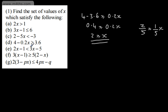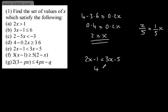For the next one we have x's on both sides, so we treat it like an equation. We have 2x minus 1 strictly less than 3x minus 5. Taking 2x from both sides and adding 5 to both sides gives x is strictly greater than 4. So the set of values that satisfy this is x greater than 4.